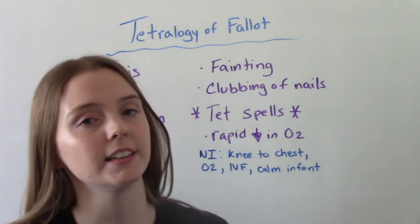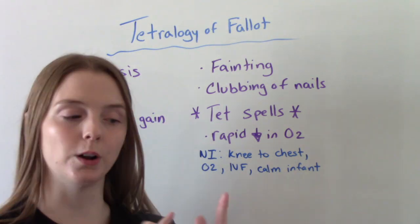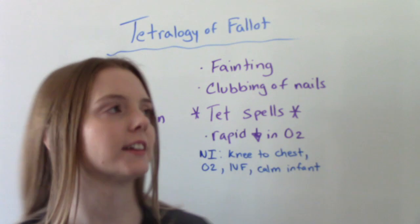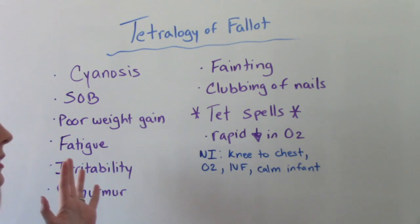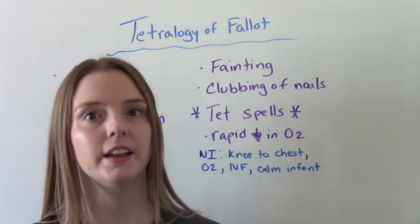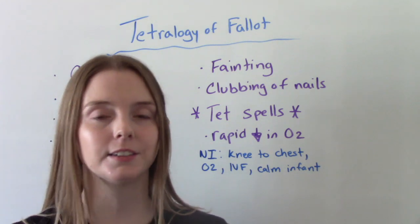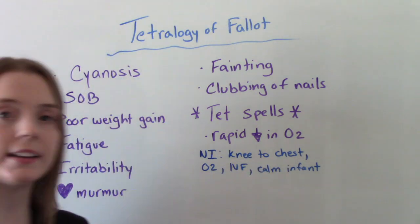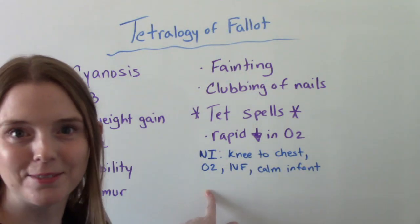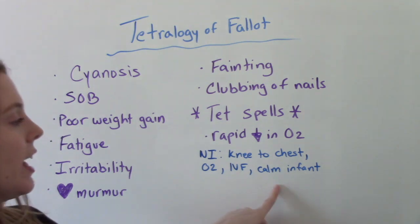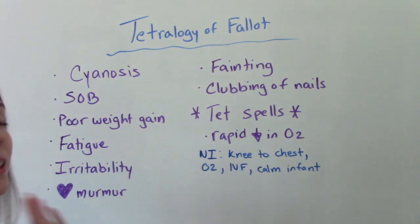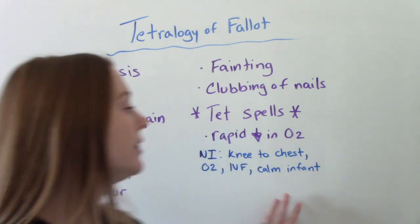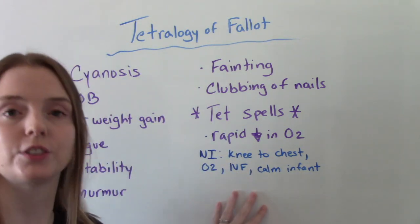Older children might experience fainting and clubbing of the nails, which is related to poor oxygen supply to the extremities and fingers. The big one — the hallmark sign — is called TET spells. TET spells happen because there is a rapid drop in oxygen in the body. This is an emergency and the nurse needs to act right away. We put them in the knee-to-chest position, give them oxygen, usually give IV fluids, and then calm them down. Prolonged crying uses up a lot of oxygen, so getting them to calm down and rest will help conserve oxygen for them.